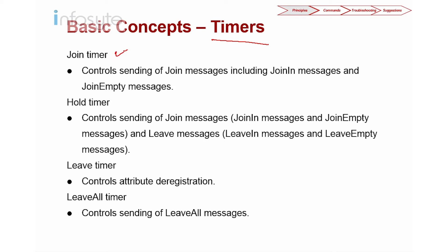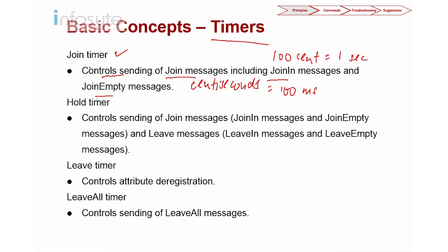First, we have the join timer, which controls the sending of join messages — specifically the join-in and join-empty messages. When configuring the timer, the unit is centiseconds. One centisecond equals 10 milliseconds, so 100 centiseconds equals one second. The join timer default is one second.